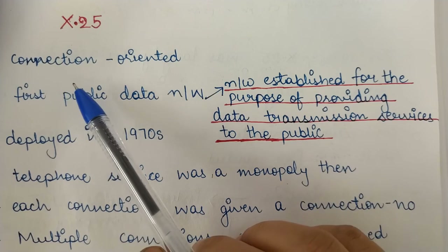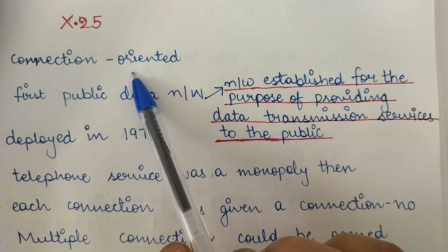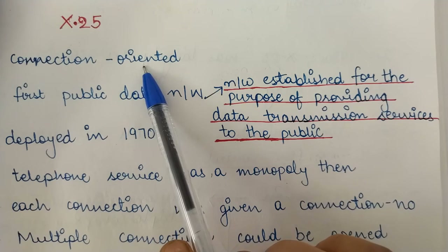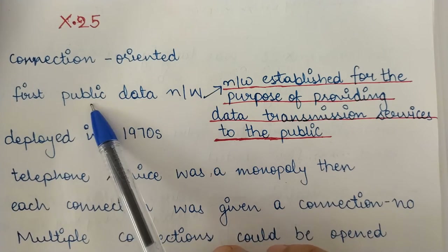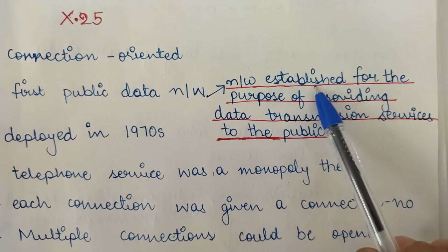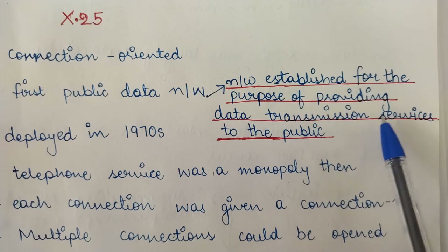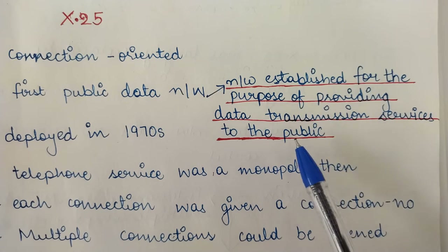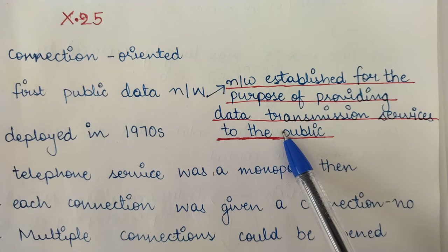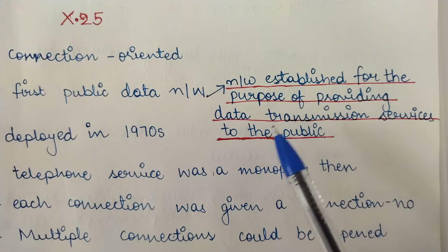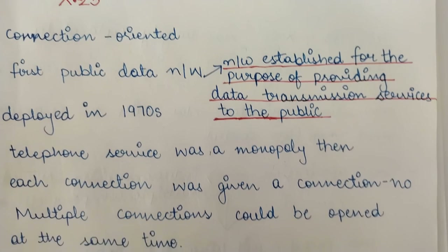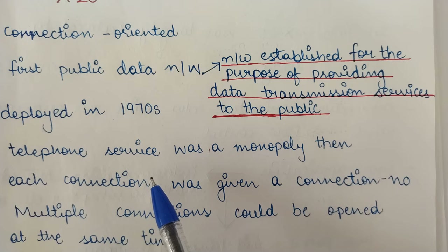X.25 is a network — or was a network — which was connection-oriented, meaning it had physical lines for connection from one end to the other. It was the first public data network. A public data network is a network specially established for providing data transmission services to the public so that the general public can send and receive data. It was deployed in the 1970s, at a time when telephone service was a monopoly.